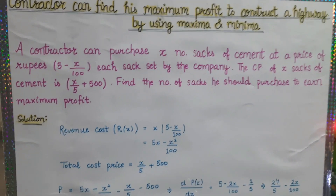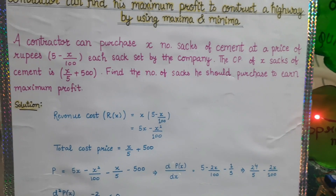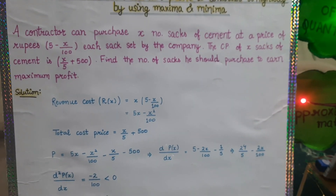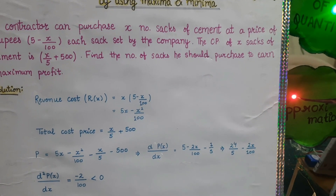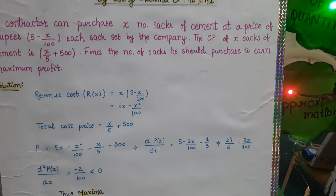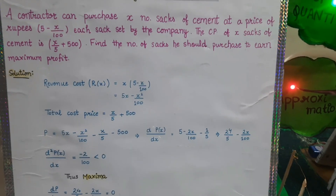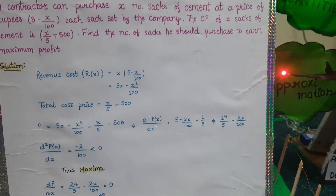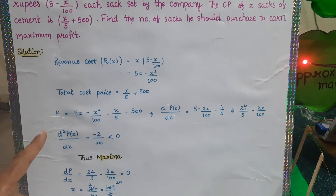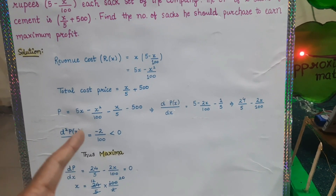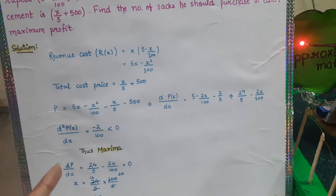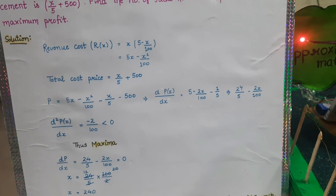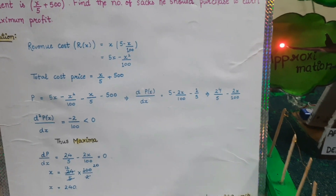For example, a contractor can purchase x number of sacks of cement at a given price. The cost price is also given to him, and he can find the number of sacks he should purchase to earn maximum profit. By taking revenue, cost, and total cost, you can find the profit. Then by using the derivative and the second derivative test, he can find the maximum number of sacks to purchase to earn the maximum profit.